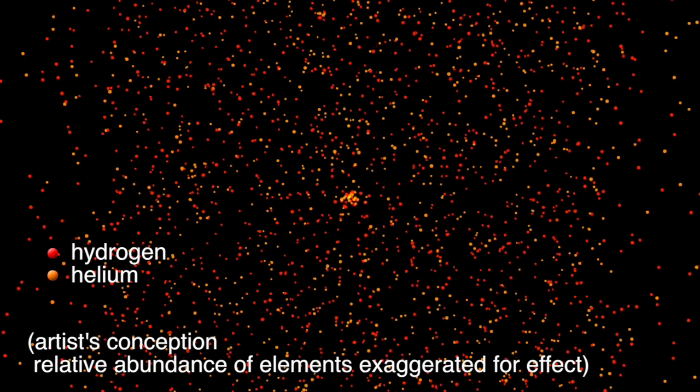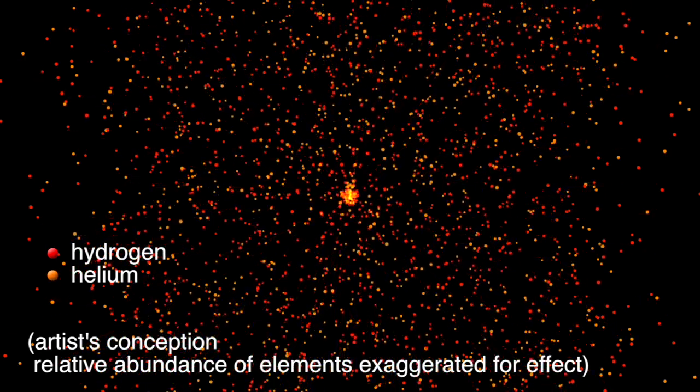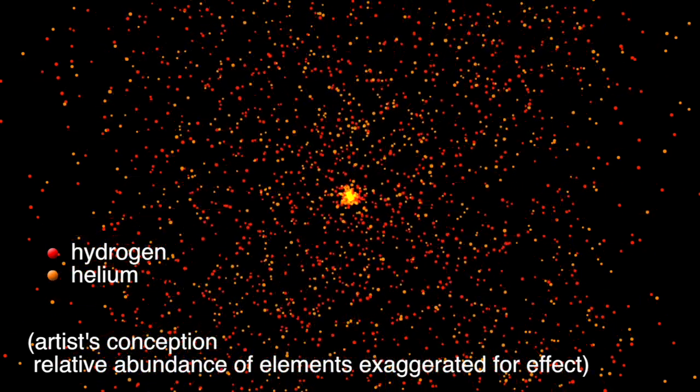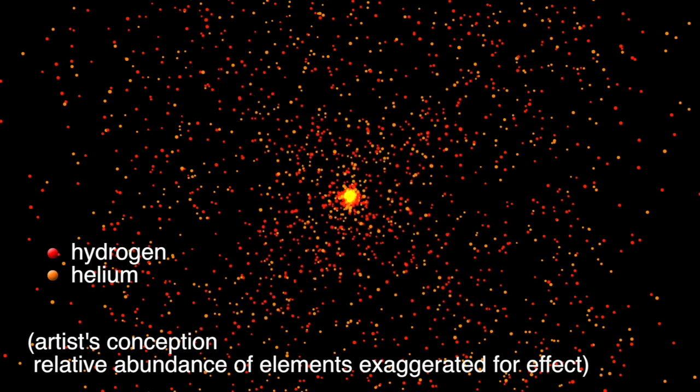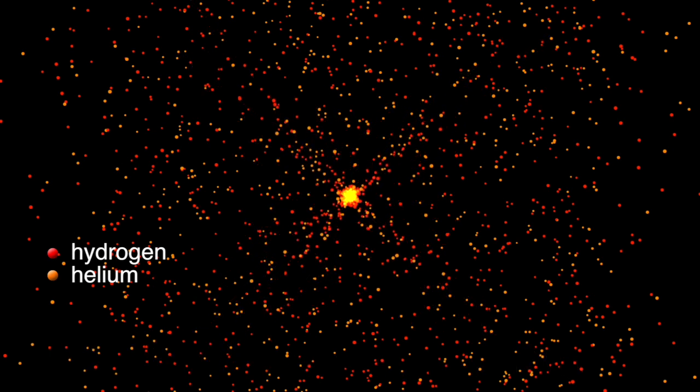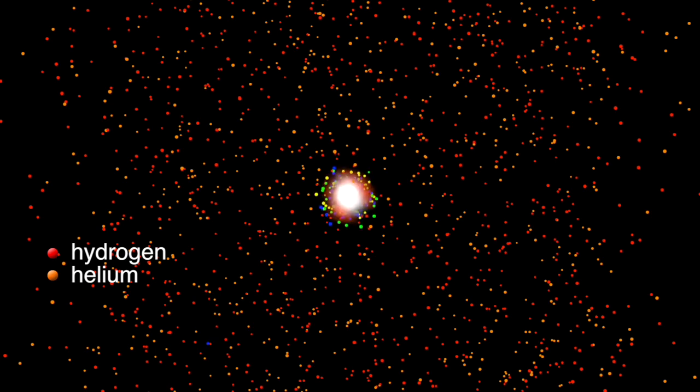Stars mirror the chemical composition of the galactic gas from which they were born. The very oldest stars consist almost entirely of the two lightest elements, hydrogen and helium. They were born before ancient supernova explosions built up significant amounts of heavier elements.